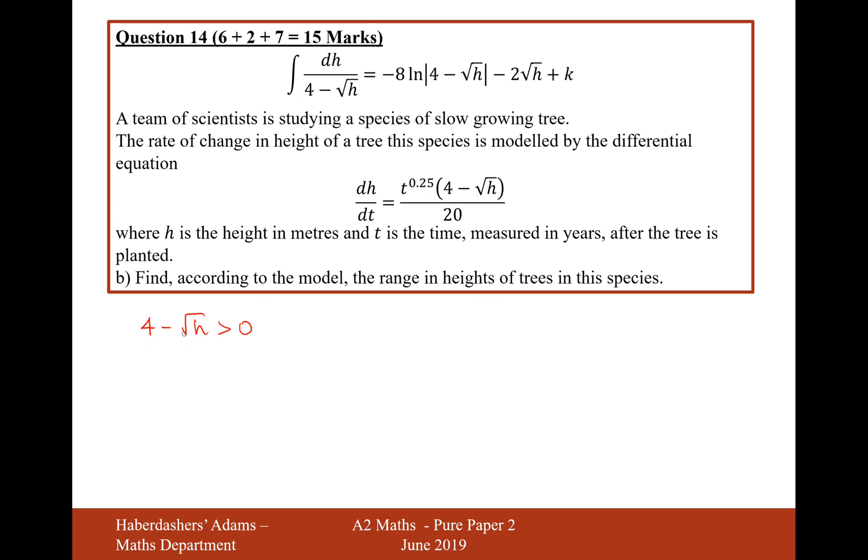4 minus root h is going to have to be greater than 0. Because the trees don't shrink, that makes sense, doesn't it? That this expression here must be greater than 0 because time will always be positive as well. So if we write 4 is greater than or equal to root h and then square both sides, we're going to get 16 is greater than h. So the height is always going to be less than 16 metres.